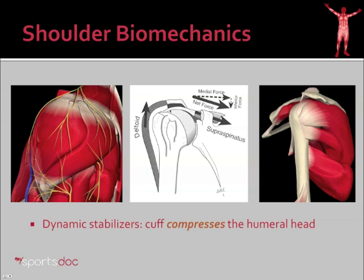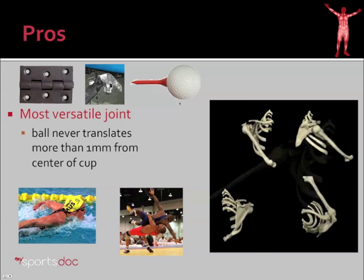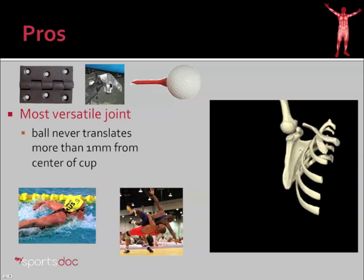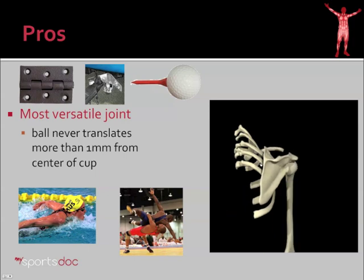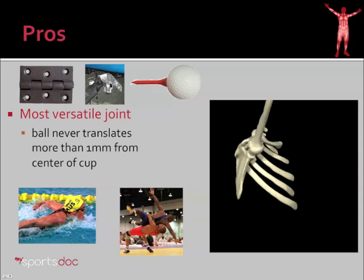You can see the importance of the rotator cuff in this diagram. The supraspinatus muscle actually provides a kind of counter force to the force of the deltoid lifting the humerus. It pushes down and also compresses the ball into the cup to allow us to lift the shoulder without hinging off of the acromion. The upside of having the most unstable joint in the body is that we also see the shoulder as the most versatile joint in the body. Interestingly, the ball of the shoulder never translates more than one millimeter from the center of the cup through all that range of motion, because of the fine balance of the rotator cuff muscles.